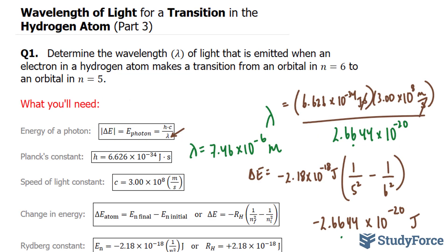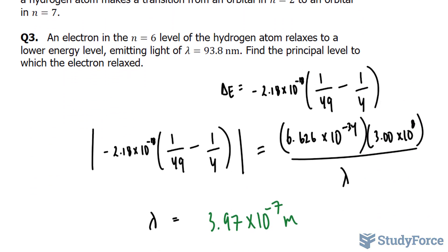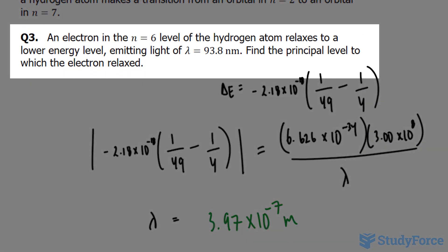In the final part of this series where we looked at how to find the wavelength of light for a transition in the hydrogen atom, we left off with question number three. In question number three we asked, an electron in the n equals 6 level of the hydrogen atom relaxes to a lower energy level, emitting light of lambda equals 93.8 nanometers.